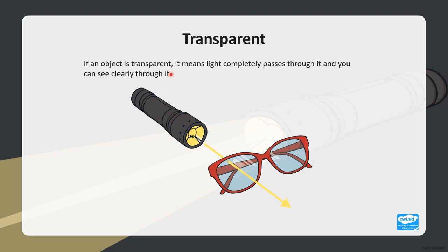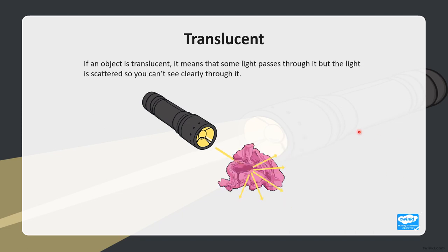If an object is transparent, light completely passes through it and you can see clearly through it, so there is no shadow formed. Cahaya boleh tembus, takkan ada bayang-bayang yang terhasil. If an object is translucent, some light passes through but the light is scattered, so you can't see clearly through it. Examples include a coloured plastic bag or tracing paper — ada bayang-bayang, but less clear.